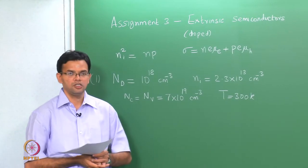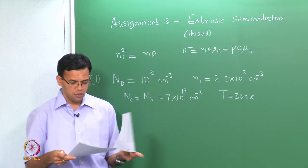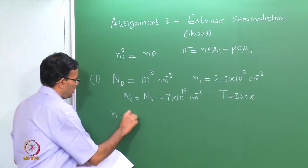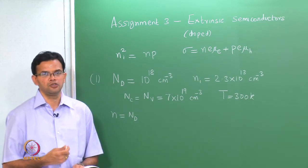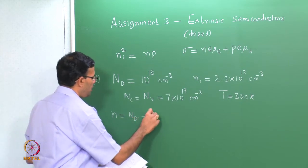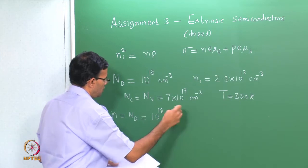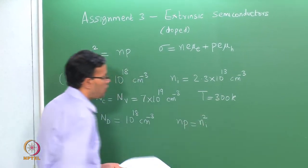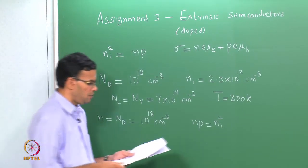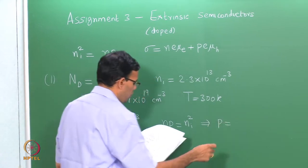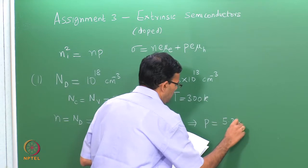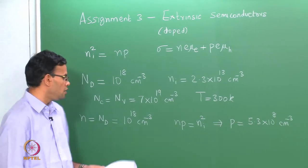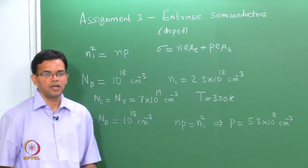The first question asks: what is the hole concentration at 300 K? It is doped with donor ions, so it is an N-type semiconductor. N = N_d at room temperature since the impurities are usually fully ionized. So N = N_d = 10^18. To calculate the hole concentration we use the law of mass action: n·p = n_i². The value of N_i is given, so p works out to be 5.3 × 10^8 per centimeter cube — nearly 10 orders of magnitude smaller than the electron concentration.